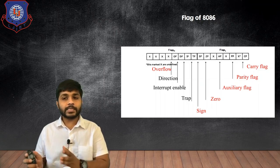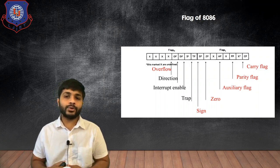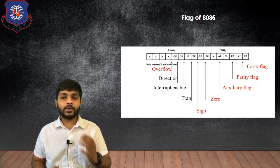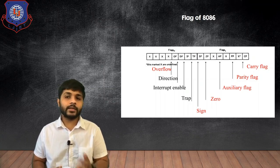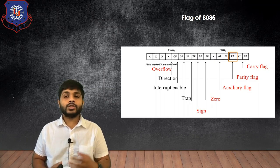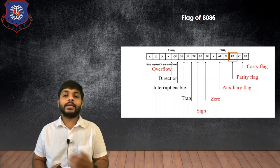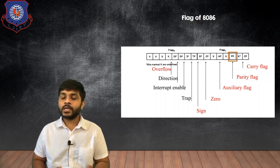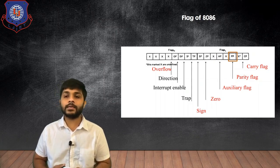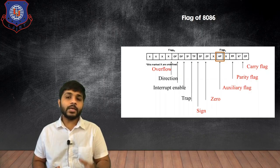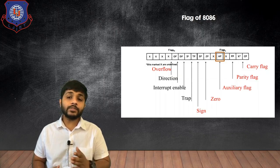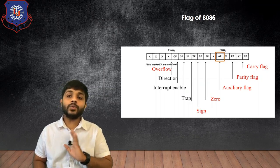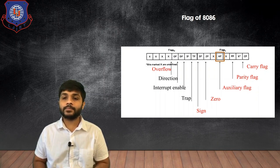Let's see the flag register for the 8086. Some flags were present in the 8085 and some flags are new. The first flag is the Carry Flag — when performing any arithmetic operation and a carry is generated, the carry flag will be set. The Parity Flag is set when the total number of ones in the result is even, and reset when odd. The Auxiliary Flag is set when a carry is transferred from the lower nibble to the higher nibble, i.e., from bit D3 to D4.